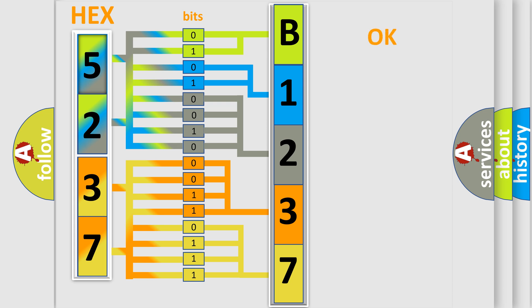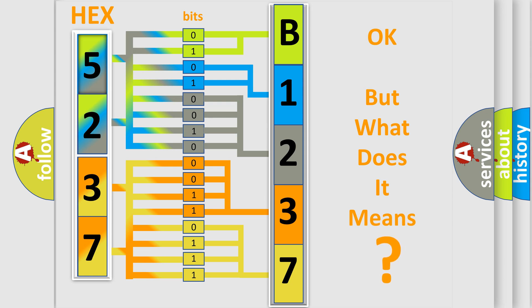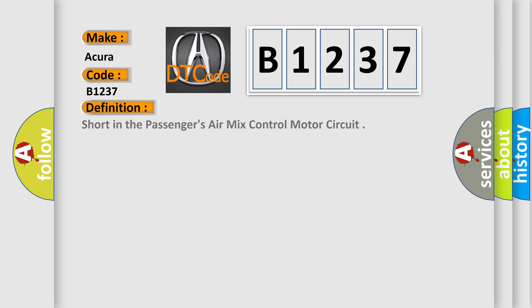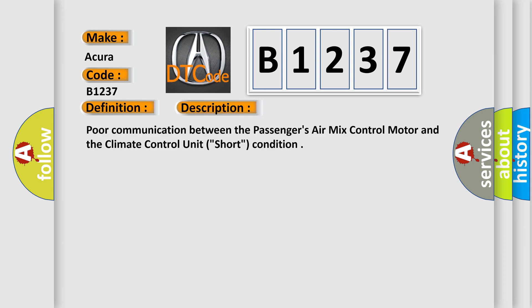We now know how the diagnostic tool translates the received information into a more comprehensible format. The number itself does not make sense to us if we cannot assign information about what it actually expresses. So, what does the Diagnostic Trouble Code B1237 interpret? The basic definition is: short in the passenger's air mix control motor circuit.